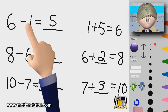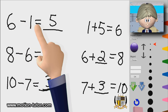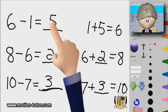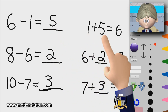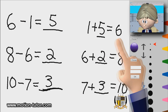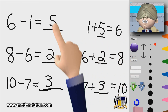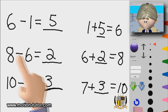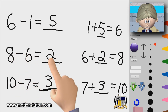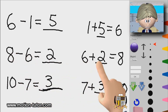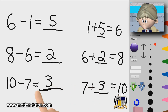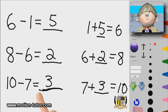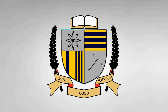So: six minus one — one plus five is six, so that number is five. Eight minus six is a number, but six plus two is eight, so it has to be two. And same thing for ten minus seven — the answer is three. This is using addition to help with subtraction. Bye!